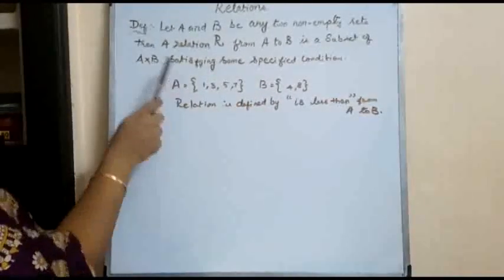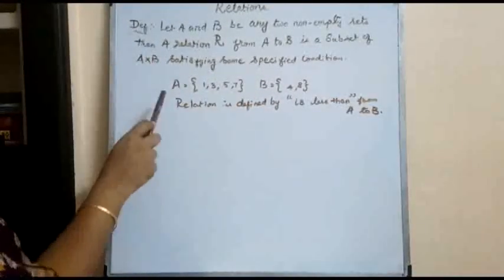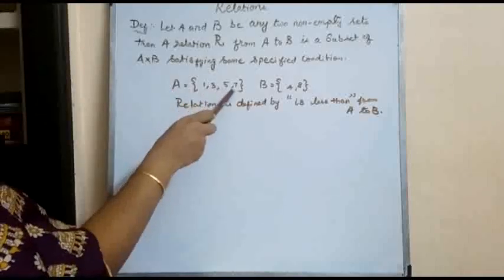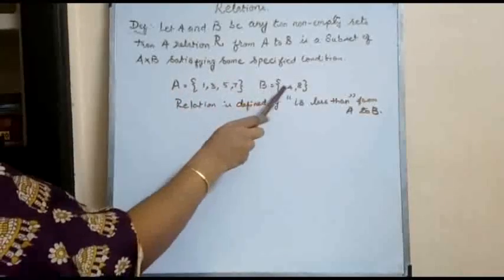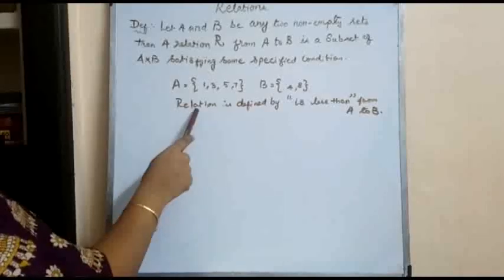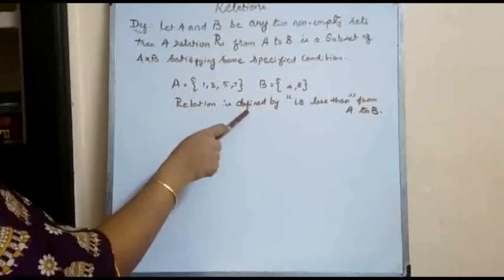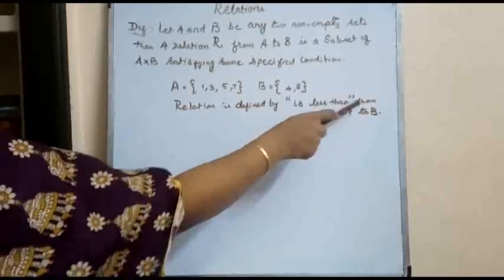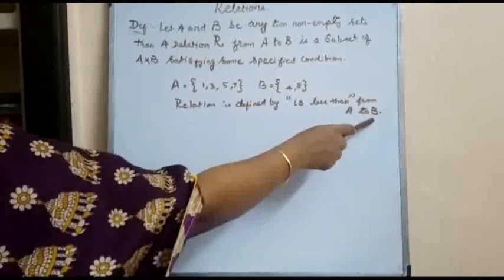We can illustrate this definition with an example. Here A is equal to {1, 3, 5, 7} and B is equal to {4, 8}. The relation is defined by 'is less than' from set A to B.